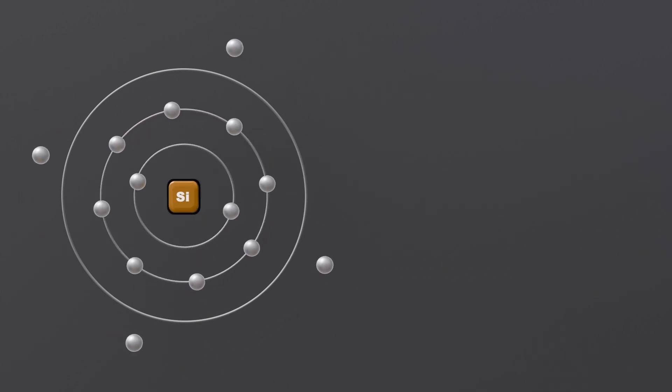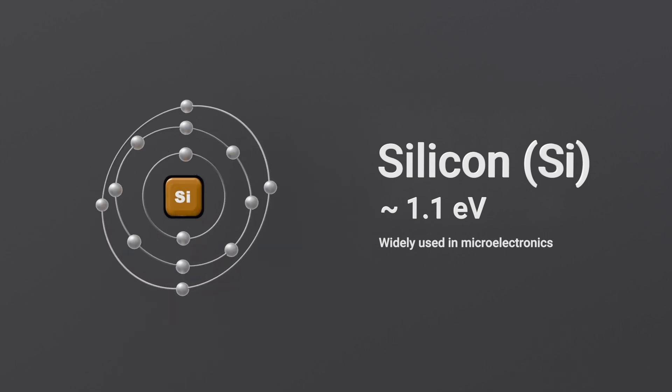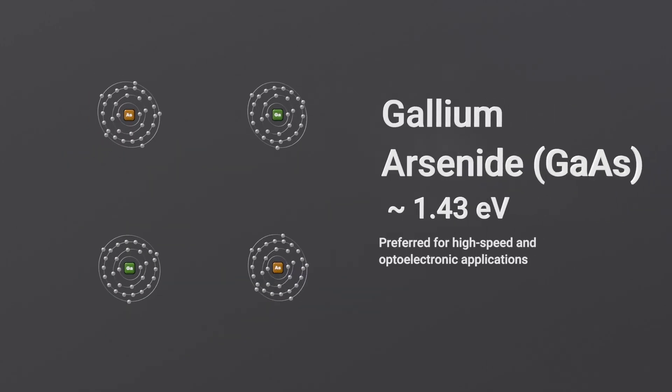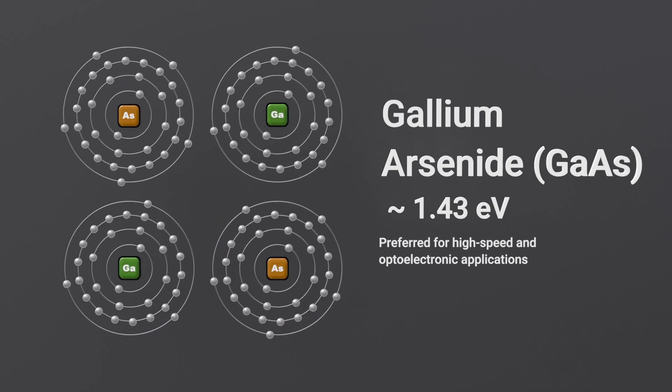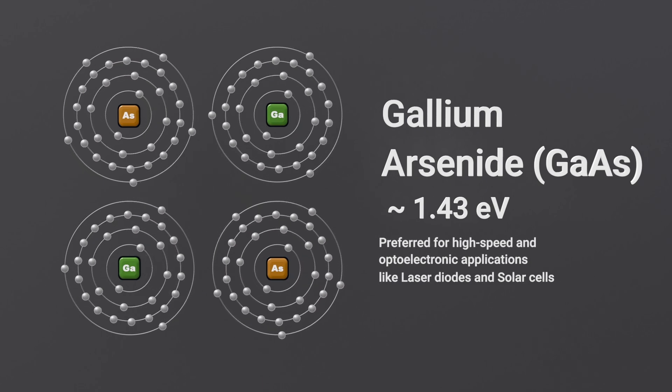For example, silicon, with a band gap of about 1.1 eV, is widely used in microelectronics, whereas gallium arsenide, with a band gap of 1.43 eV, is preferred for high-speed and optoelectronic applications like laser diodes and solar cells.